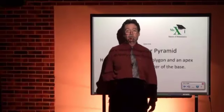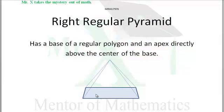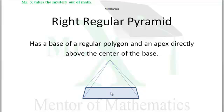Hi, Mr. X with glossary term: right regular pyramid. Now the base doesn't have to be a square — it could be any regular polygon. It could be an equilateral triangle. It could be any regular polygon, with the apex directly above the center of that regular polygon base. It's a right regular pyramid.